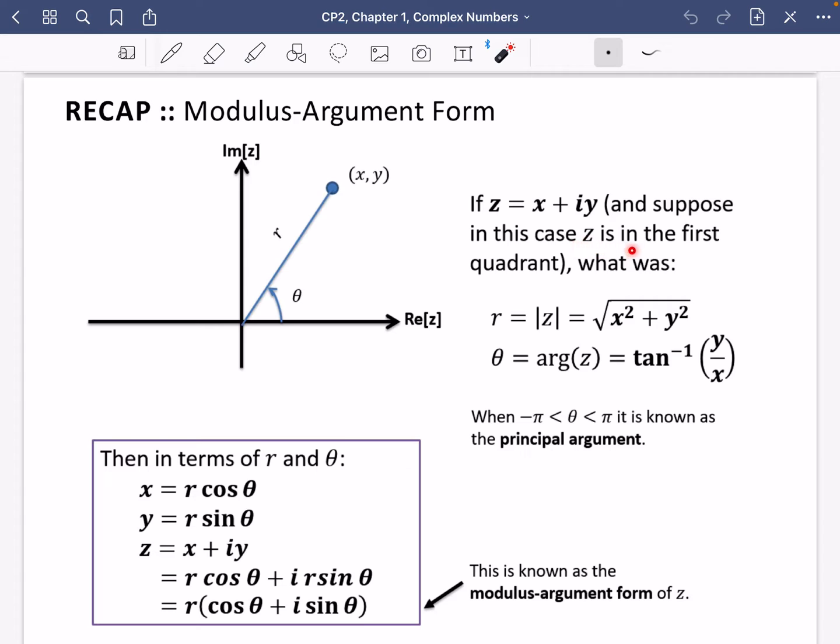If Z is equal to x plus iy, and I'm supposing in this case that Z was in the first quadrant, what was r? Well, r was the length of this line, which we called the modulus of Z. This was found by doing the x coordinate squared plus the y coordinate squared and square rooting it because of Pythagoras. And to find what theta was, which was the argument of Z, it was found by doing the inverse tan of y over x.